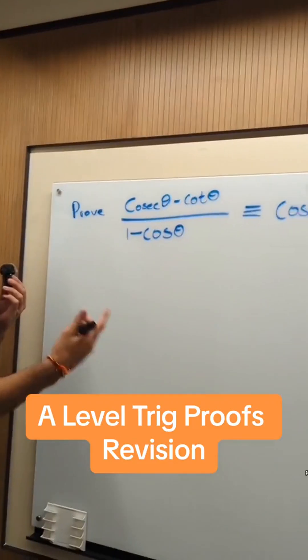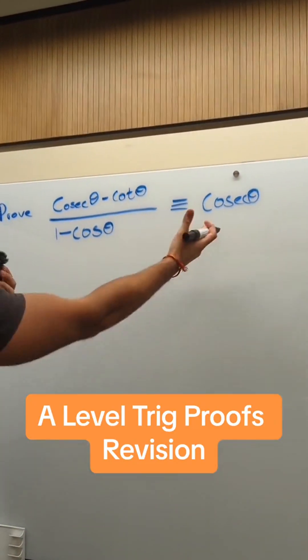Prove cosec theta minus cot theta, all over 1 minus cot theta equals cosec theta.